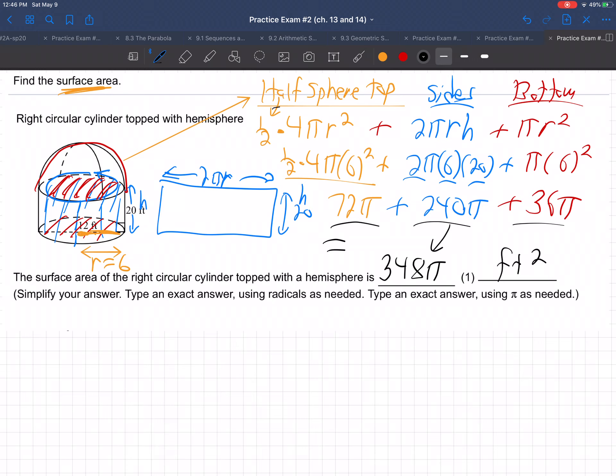So there we go. We have the half a sphere top, the sides, which is 2πrh, and the bottom, which is πr². There we go.